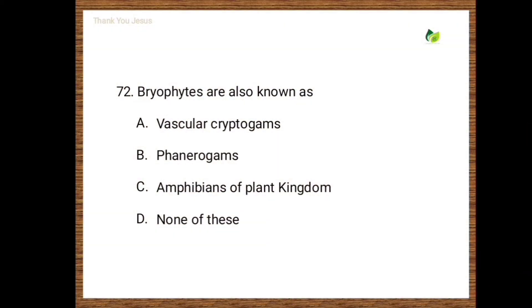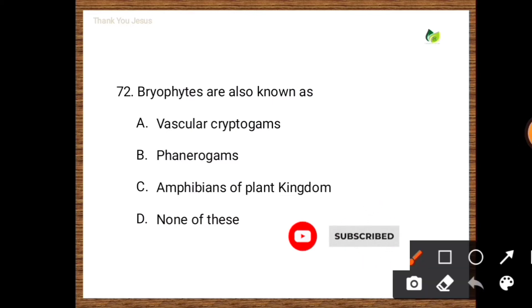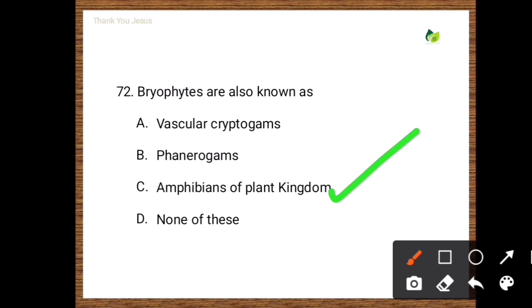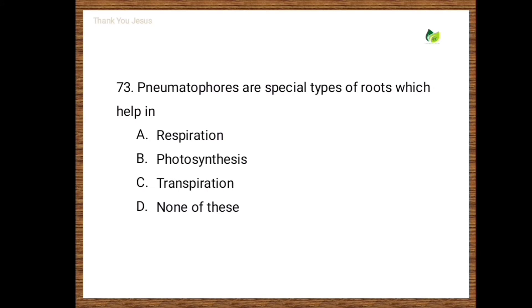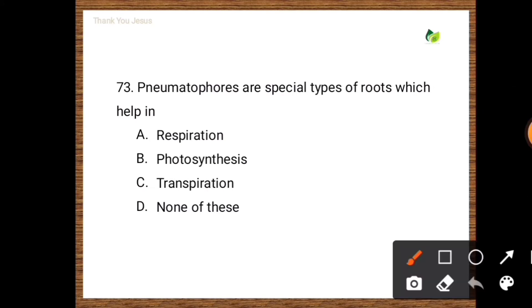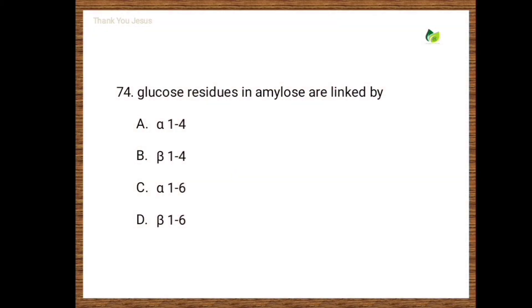Next question: Bryophytes are also known as — vascular cryptogams, phanerogams, amphibians of the plant kingdom, none of these. The correct answer is amphibians of the plant kingdom. Next question: Pneumatophores are special types of roots which help in — respiration, photosynthesis, transpiration, none of these. The correct answer is respiration.